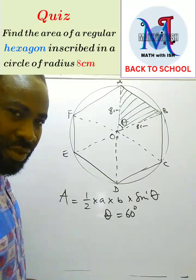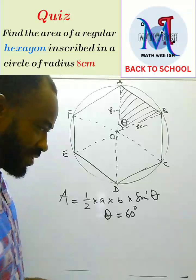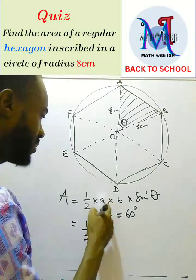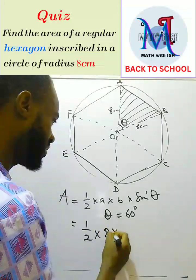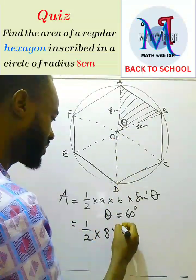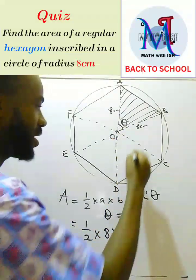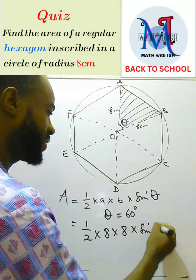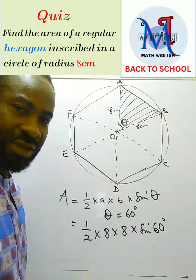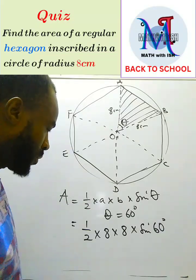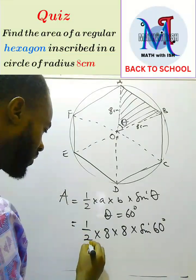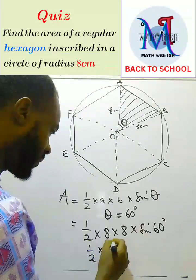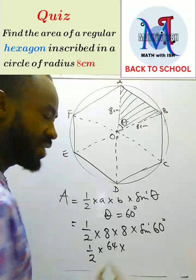That will give us 1/2 times our a, the first side 8, times our b, the second side 8, and then our θ which is 60 degrees. This is going to give us 1/2 times 8 times 8 is 64 times sin 60 is √3/2.